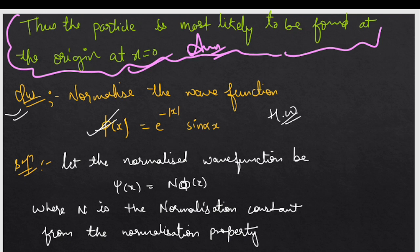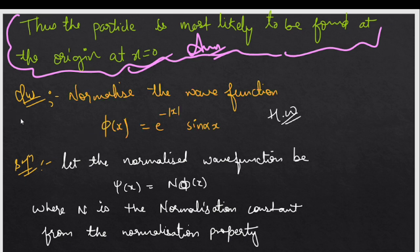What was our question? We have to normalize the wave function. The wave function is psi(x) = e^(-|x|) sin(αx). This is your homework question, so for this solution, what should we do first?